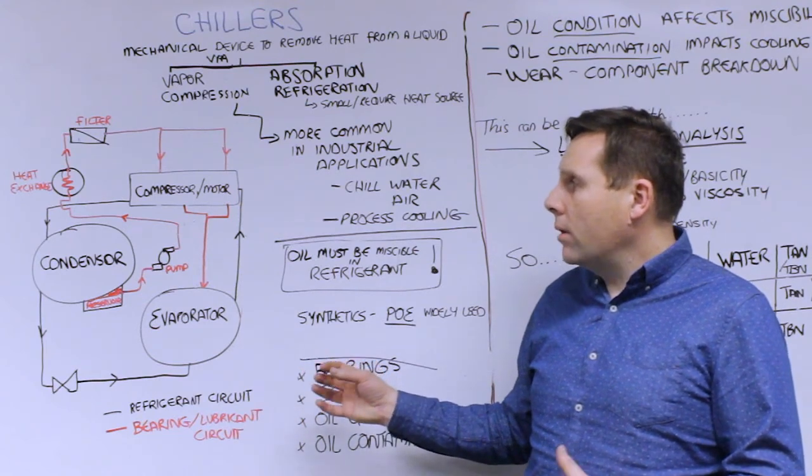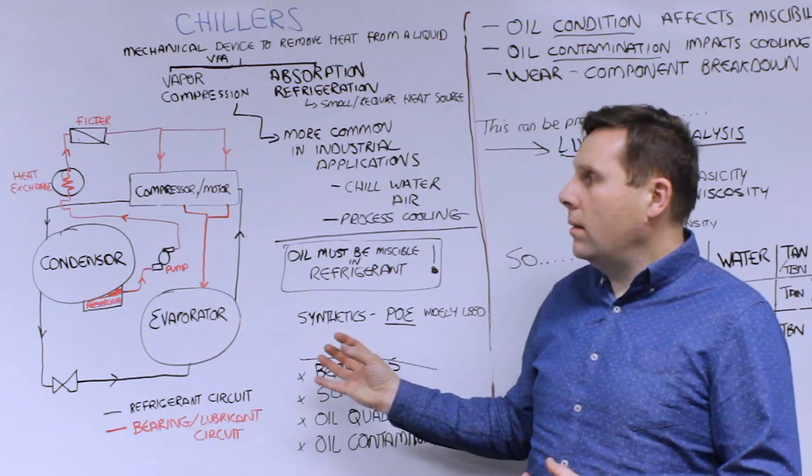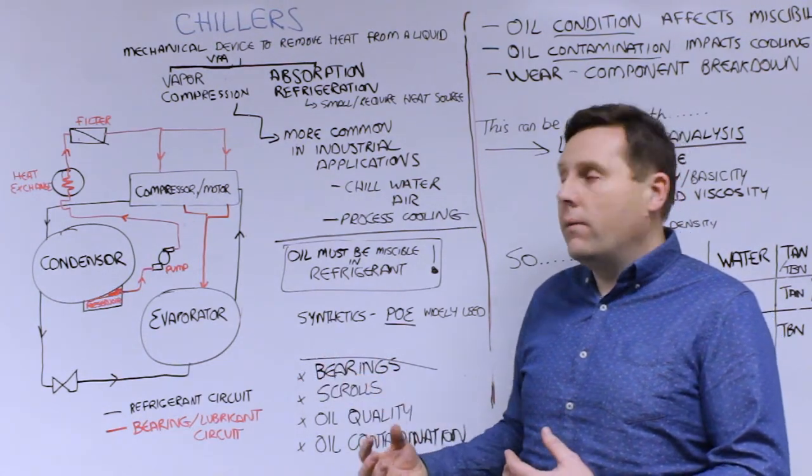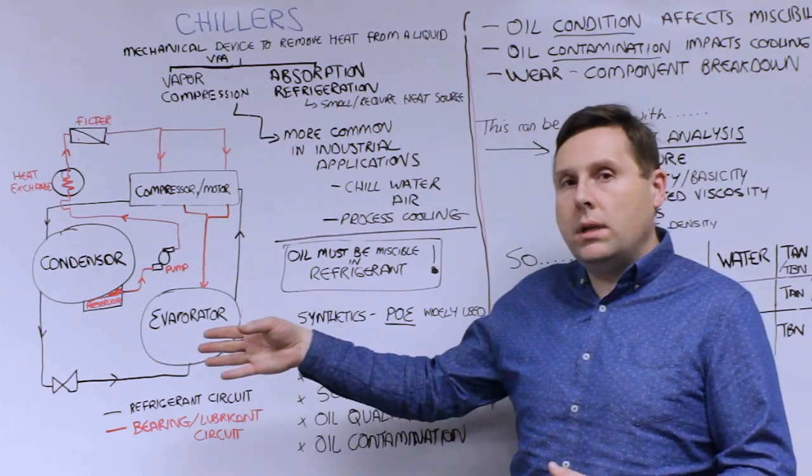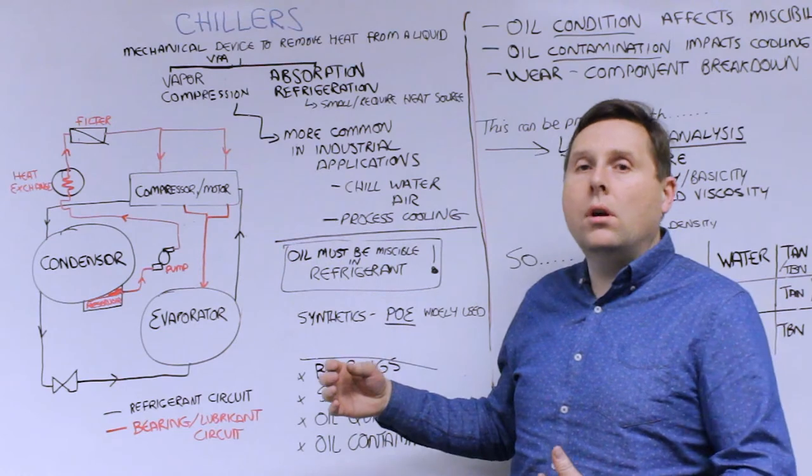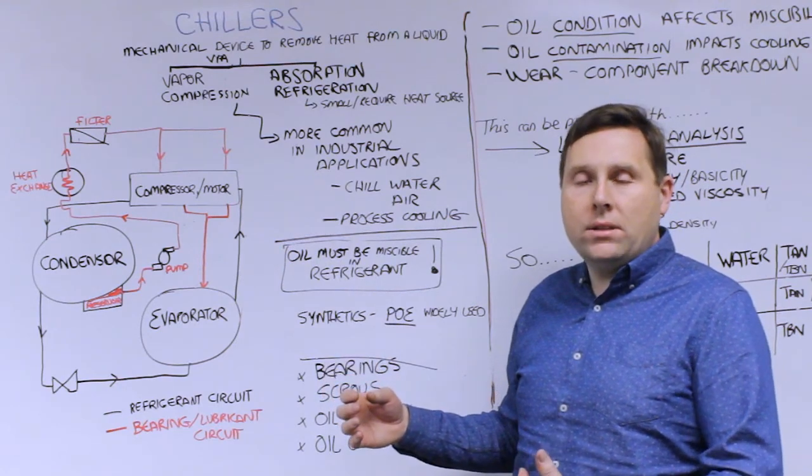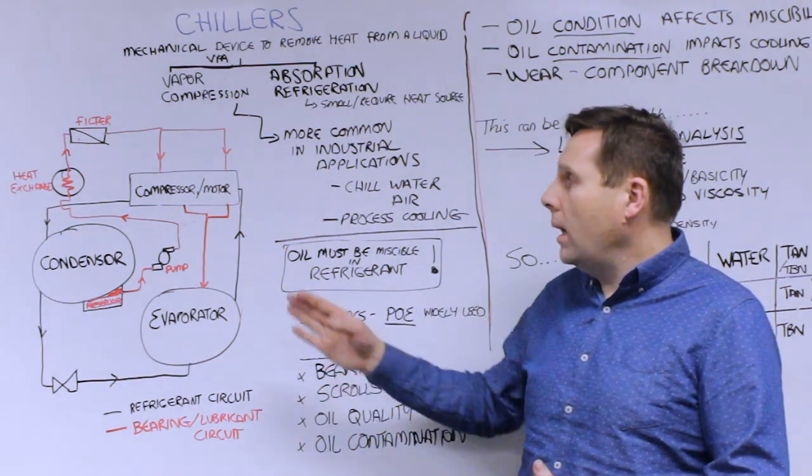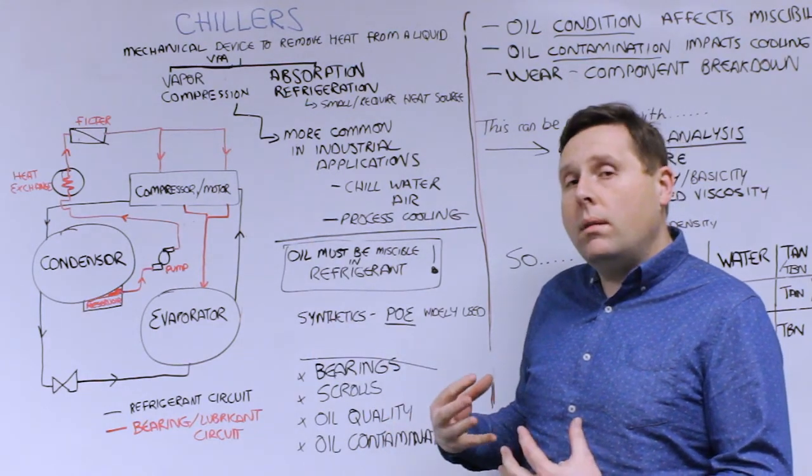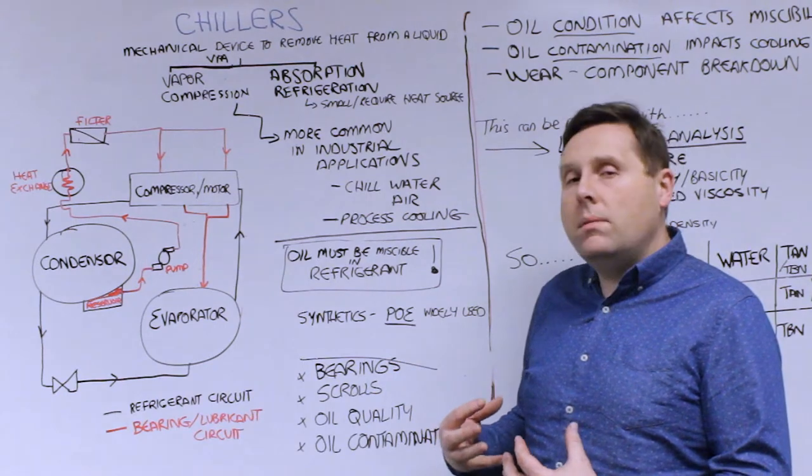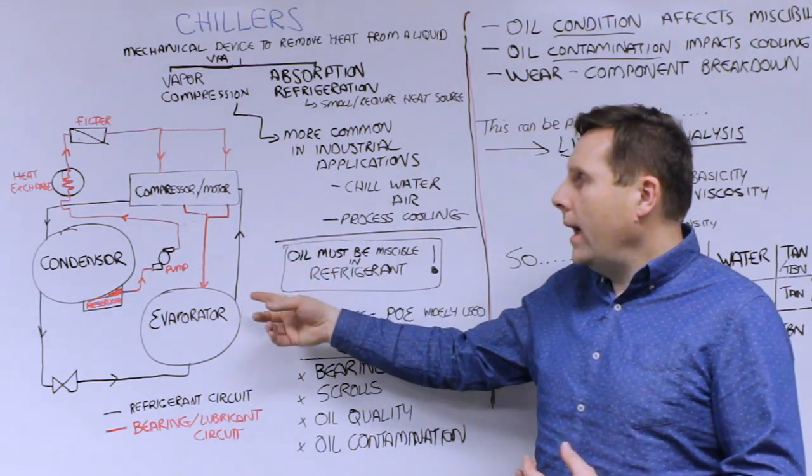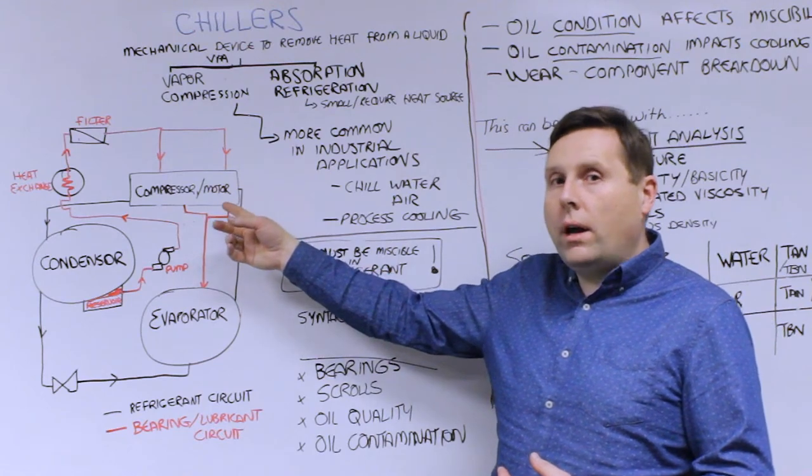However, within these systems you have to have something that pumps this fluid from an evaporator to a condenser—usually that's a compressor driven by a motor or in large situations a gas turbine. What's important is that we need to be able to look at the condition of the lubricant that's actually lubricating the driver unit, the compressor, as well as the scrolls on the condenser and evaporator systems.